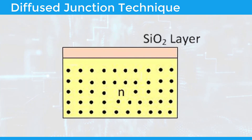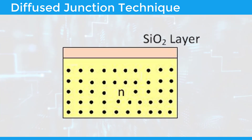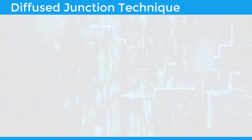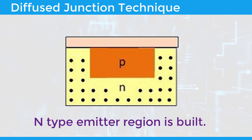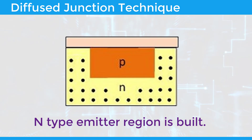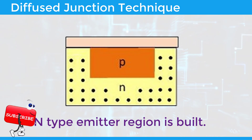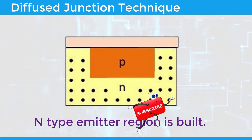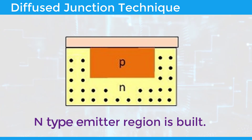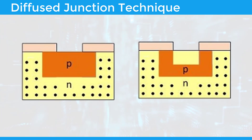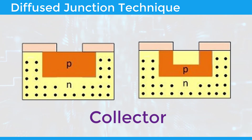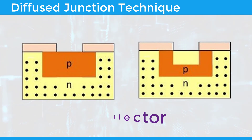Another layer of SiO2 material is grown over the entire wafer. The SiO2 layer is again engraved over the wafer, and donor-type impurities — e.g., phosphorus — are diffused. Thus, the N-type emitter region is built. The metal contacts are engraved on the surface as shown in the figure. The wafer is given suitable collector contacts and then cut into the required size.